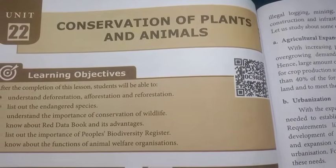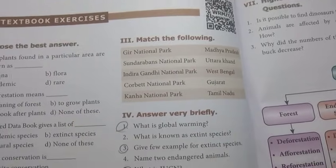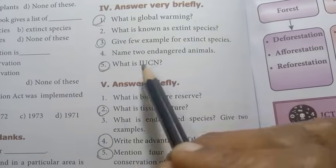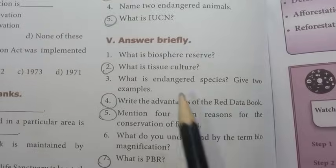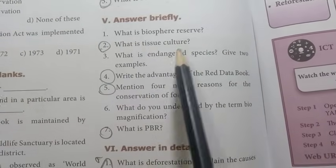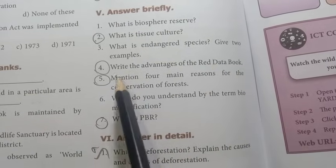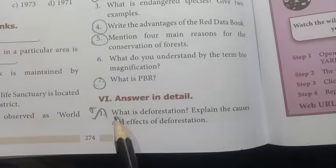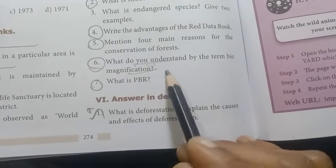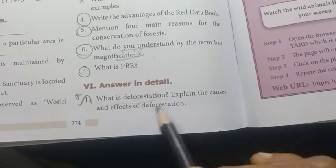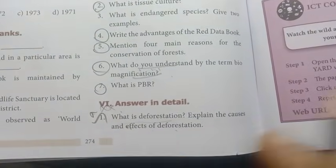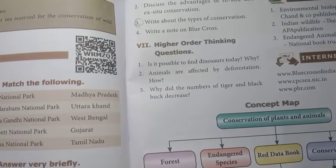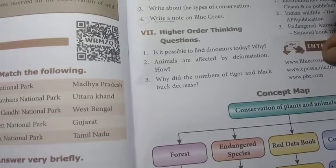Unit 22: Conservation of Plants and Animals, page number 274. What is global warming? — important. Give some examples for extinct species. What is IUCN? — first, third and fifth important. Answer briefly: What is tissue culture? — important. What are the advantages of the Red Data Book? — important. Mention four main reasons for the conservation of forests — important. What is PBR? What is biomagnification? What is deforestation? Explain the causes and effects of deforestation — previous year. Write about the types of conservation — important. Write a note on Blue Cross — important.